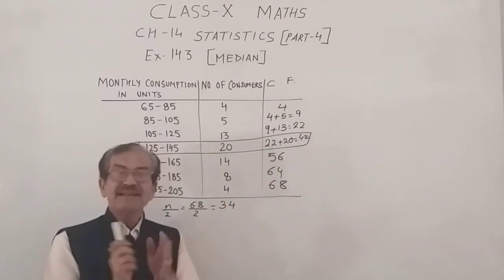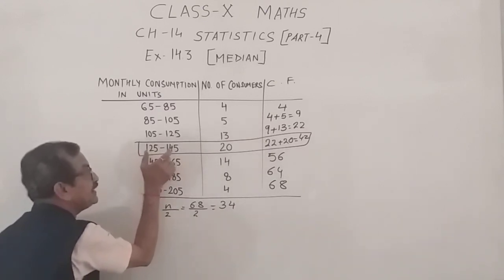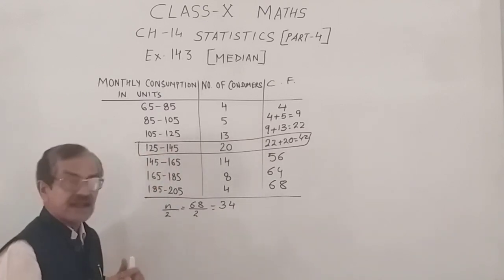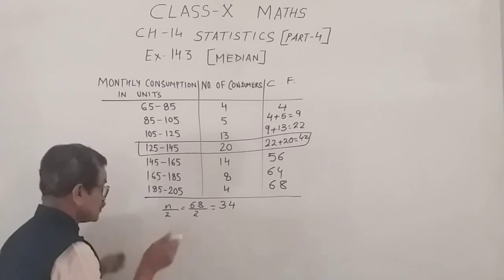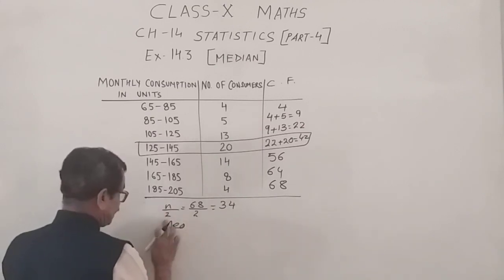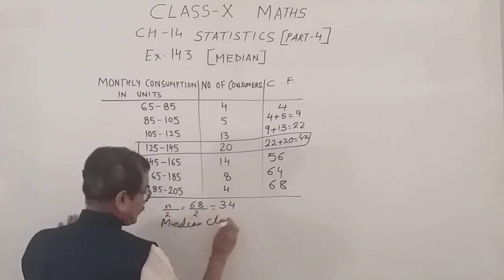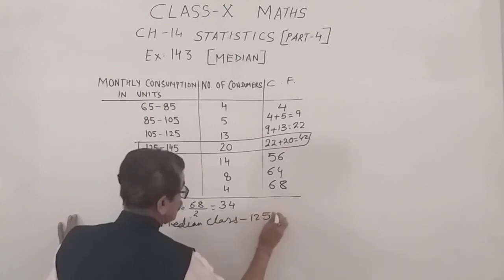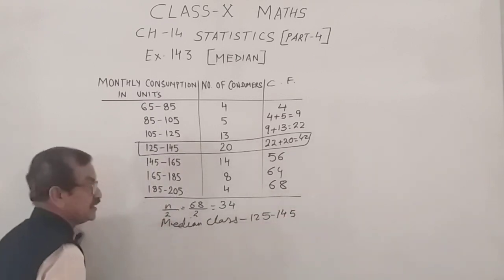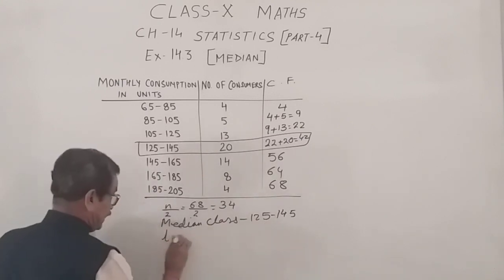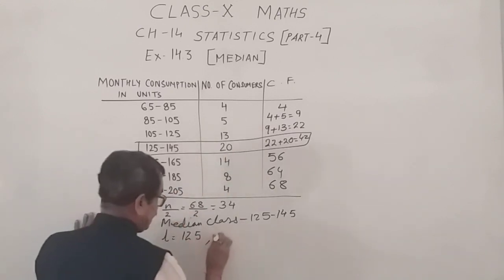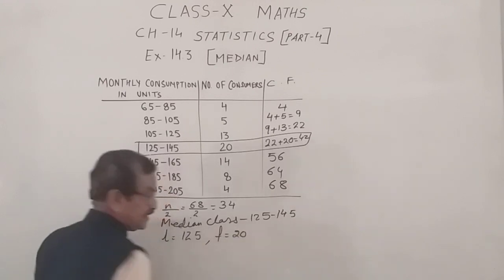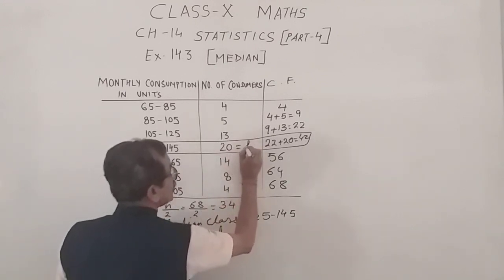Now, what is median class? Median class means that the median of the data lies somewhere between 125 and 145. Equal to or more than 125 but less than 145. So, I write here, median class is 125 to 145. That gives me the lower limit of the median class. L is 125. Then, we have the frequency of the median class. F, 20.